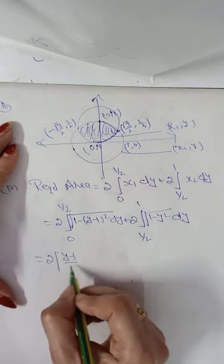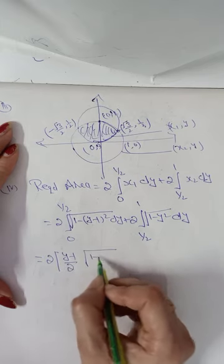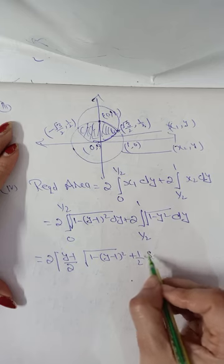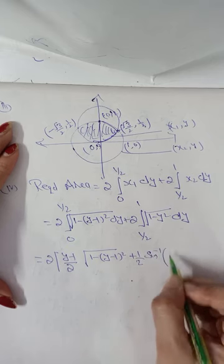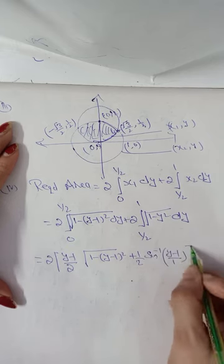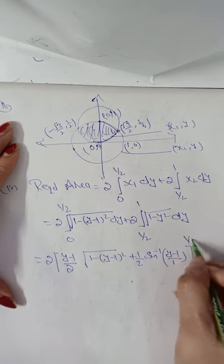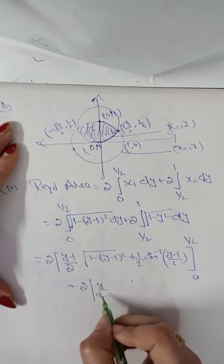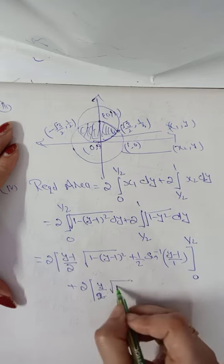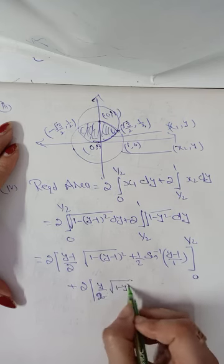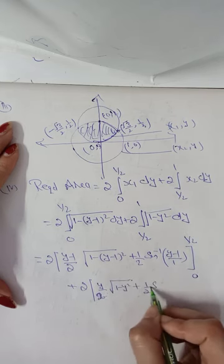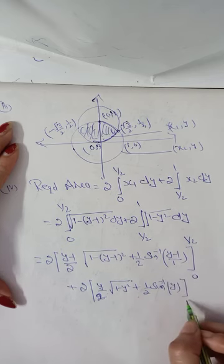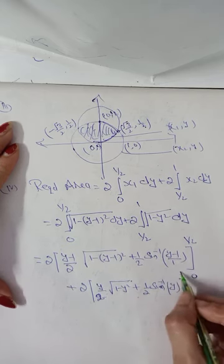Applying the standard integral formula, we get: [(y-1)/2 · √(1-(y-1)²) + 1/2 · sin⁻¹(y-1)] from 0 to 1/2, plus [y/2 · √(1-y²) + 1/2 · sin⁻¹(y)] from 1/2 to 1.